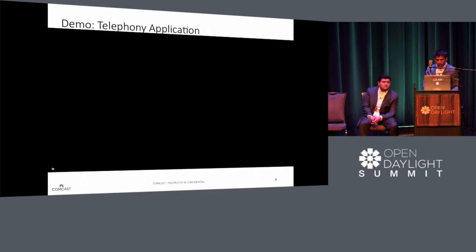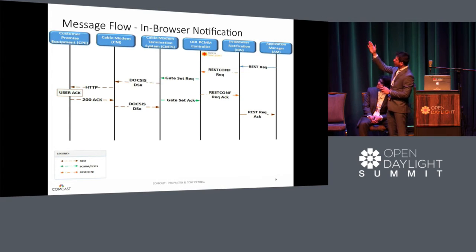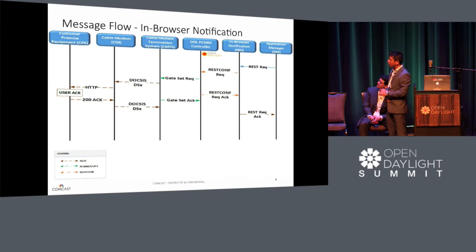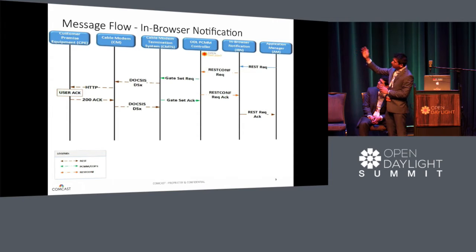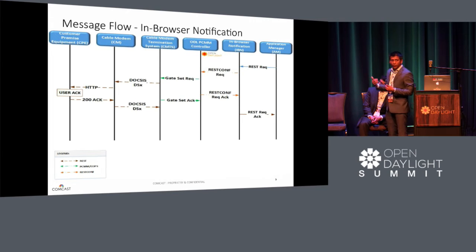This is a typical message flow where it initiates the REST API request from a third-party application. You can customize it as needed, but you need at minimum the IP address where you want to send it. Eventually it will go through the DOCSIS layer and be delivered as an HTTP message. When the user acknowledges the notification, it will send a response back all the way to the requesting application with a success response.